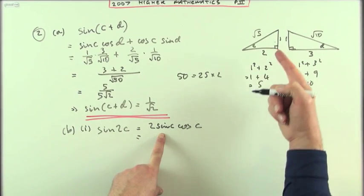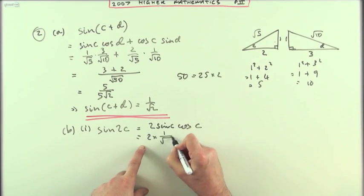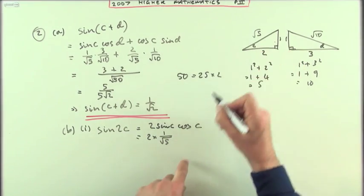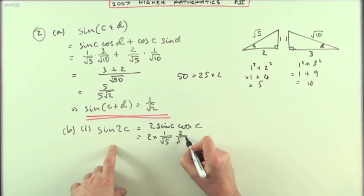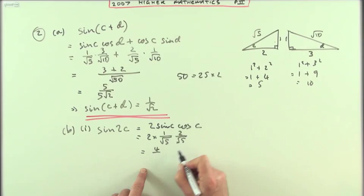Pick them out from the triangle, sin of c, opposite, 1 upon root 5. Cos of c, adjacent, 2 upon root 5. Multiply the numerators, 2 times 1 times 2 is 4. Multiply the denominators, root 5 times root 5, out pops the 5 again. So the sin of 2c is 4 fifths.